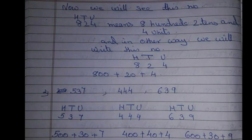Now we will see another example of expanded form. The number is 537. Using the same process: 7 in units place, 3 in tens place, and 5 in hundreds place. So how we are going to expand this number? It will be 500 plus 30 plus 7.